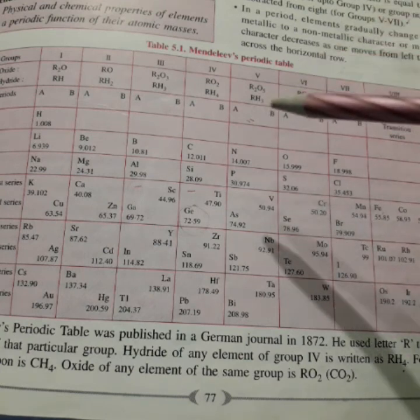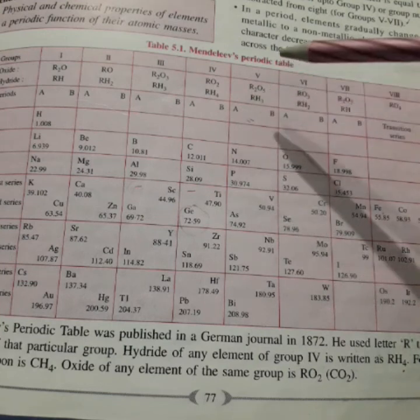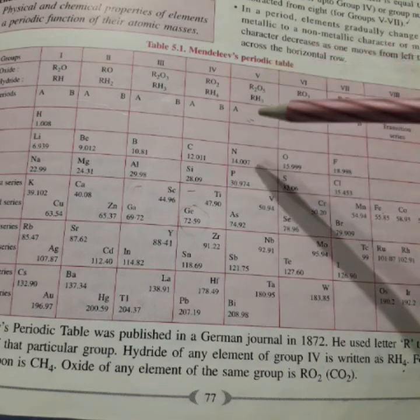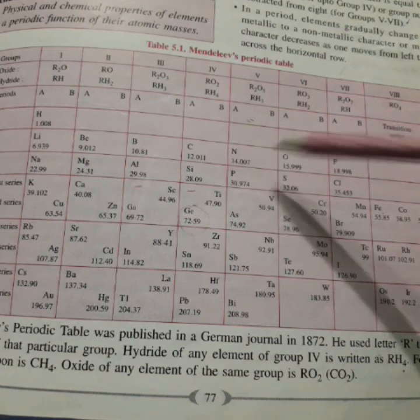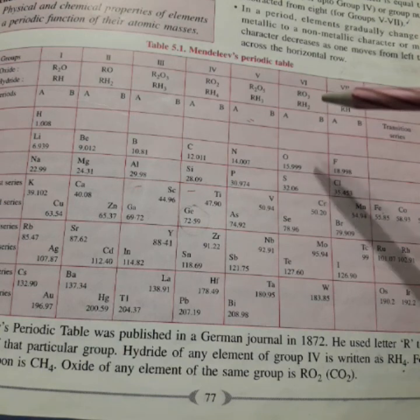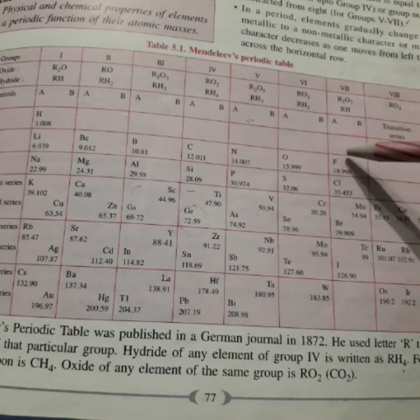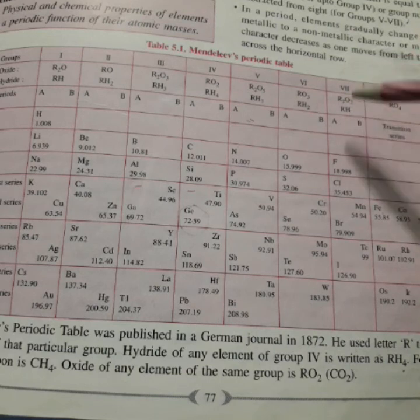For example, valency of nitrogen will be 8 minus 5 is equal to 3. Same way, valency of oxygen will be 8 minus 6 is equal to 2. Same way, fluorine 8 minus 7, 7th group number, 8 minus 7 is equal to 1.